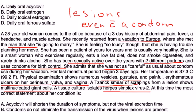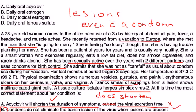So B is the correct answer. Let's look at A: acyclovir will shorten the duration of symptoms but not the viral excretion time. Acyclovir does shorten the viral excretion time, so the 'but not' part is incorrect. That's why A is not correct. So the correct answer is B.